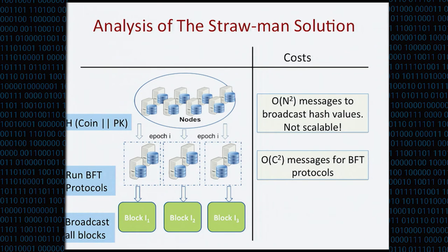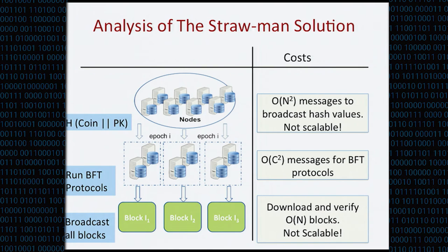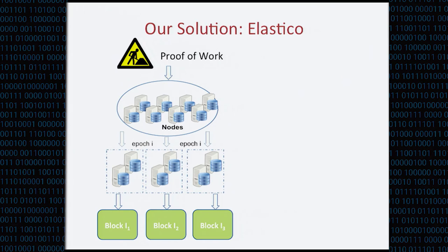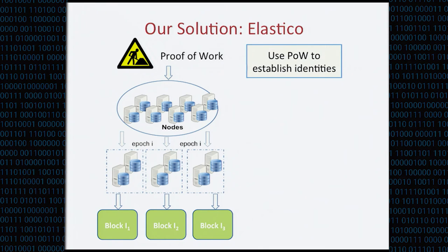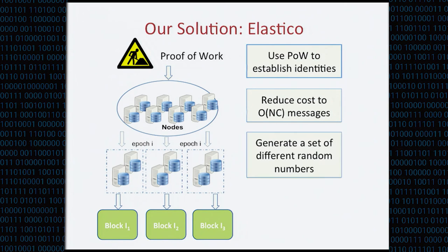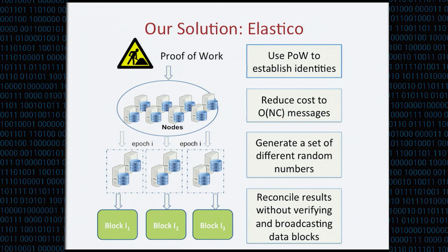In Elastico, we address all these security and performance challenges. We use proof of work to allow nodes to establish their identities, removing the PKI assumption. We reduce the cost of committee assignment from O(N²) to only O(N·C). We also generate a set of different random numbers to avoid the common random coin assumption. And we propose a mechanism to reconcile results without verifying and broadcasting all data blocks. I will now explain each of these steps in detail.